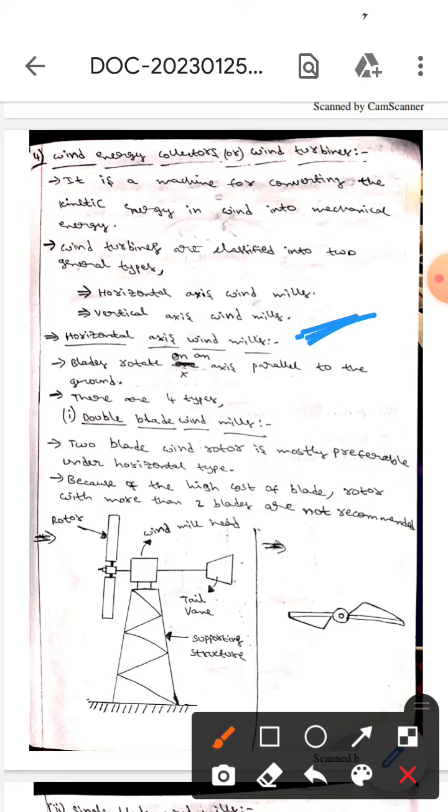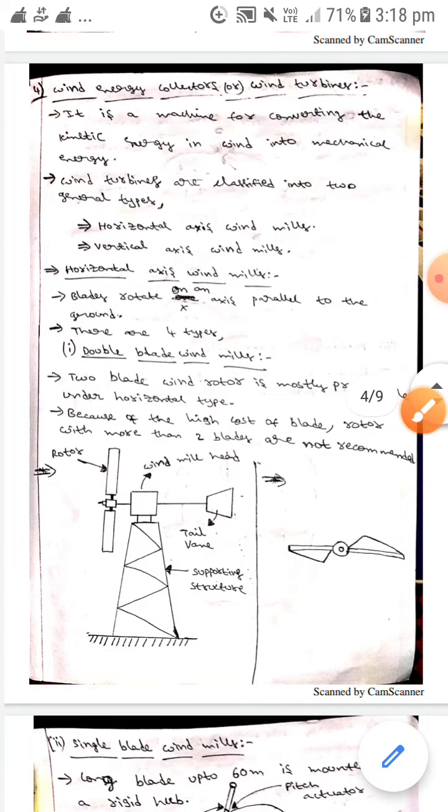Let's first discuss horizontal axis windmills. Here blades rotate on an axis parallel to the ground. There are four types of horizontal axis windmills.